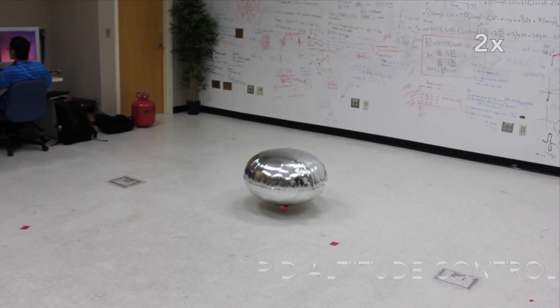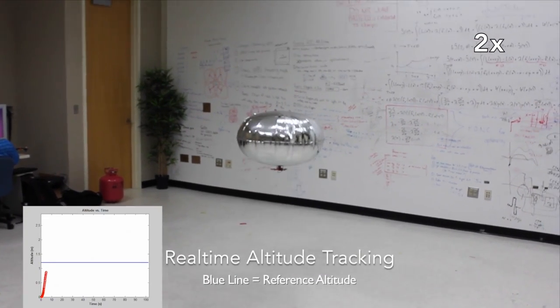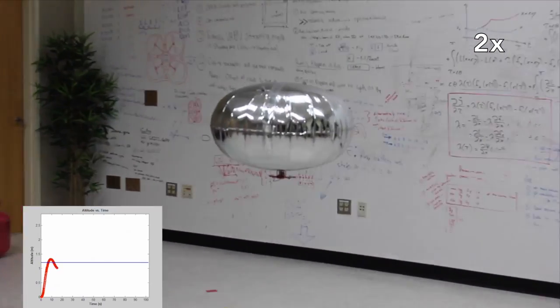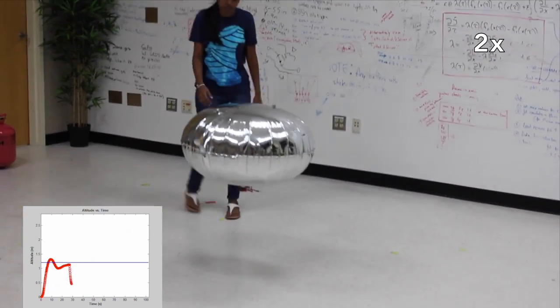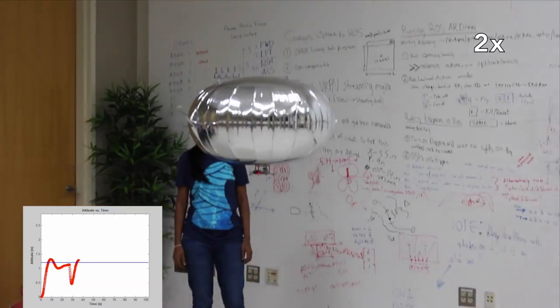Similar to yaw identification, a model was developed to control the altitude of the blimp as well. The PID gains were calculated using the PID tuner in MATLAB. In this demo, we see the blimp quickly responds to an external disturbance and stabilizes to maintain the desired altitude.